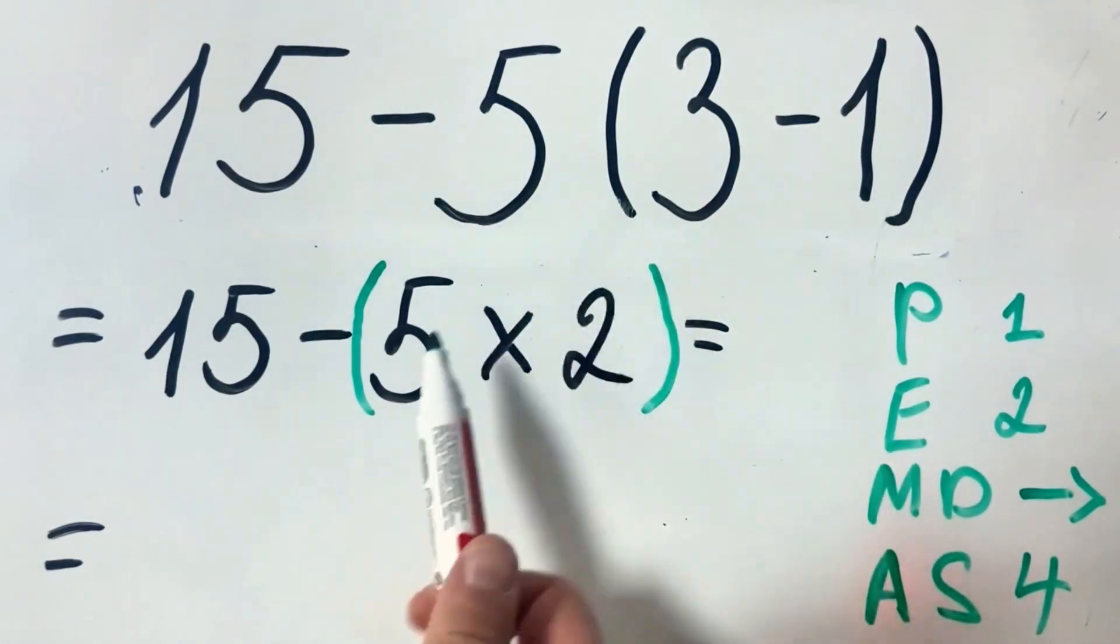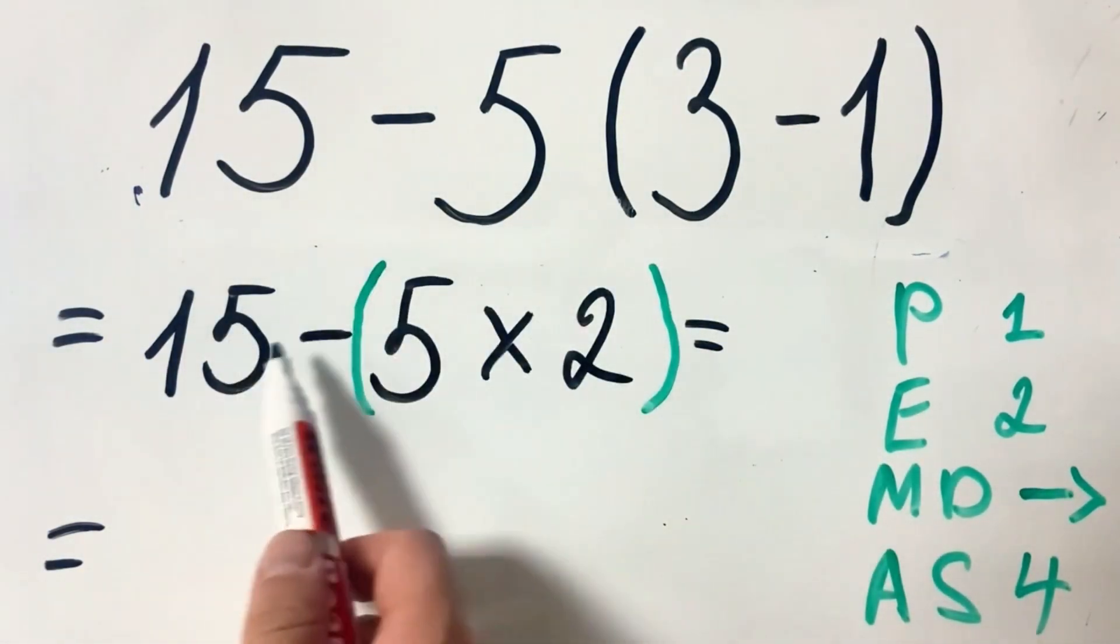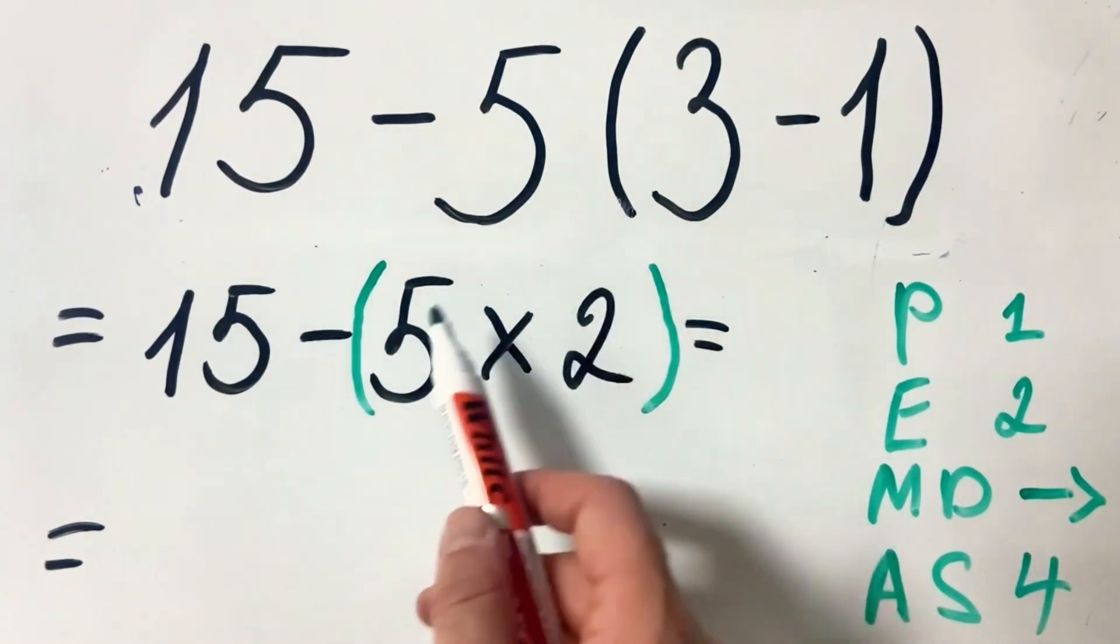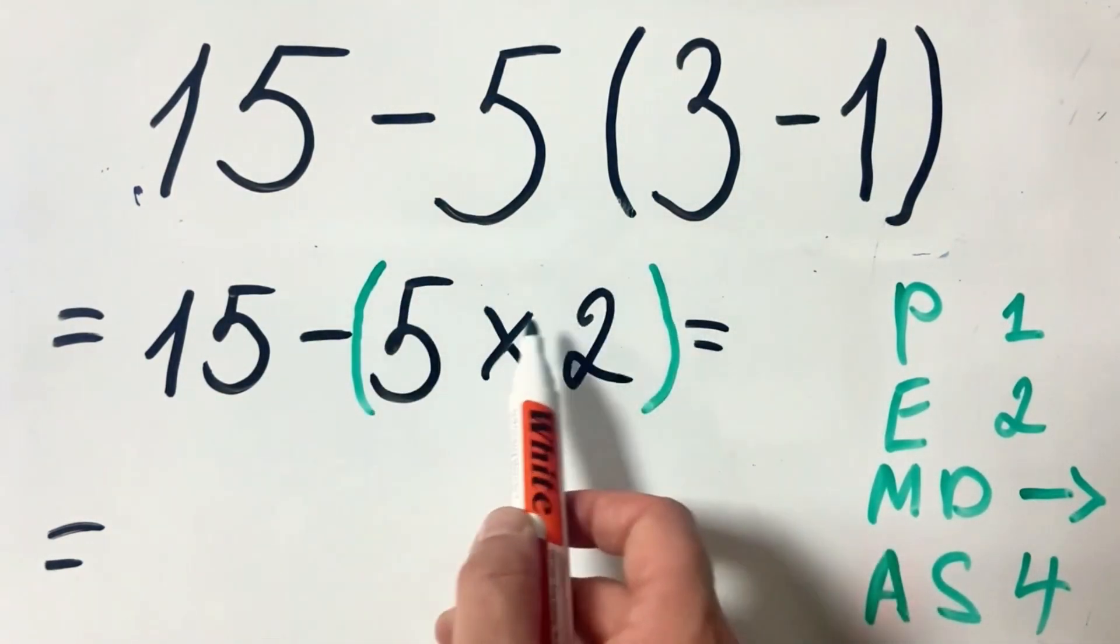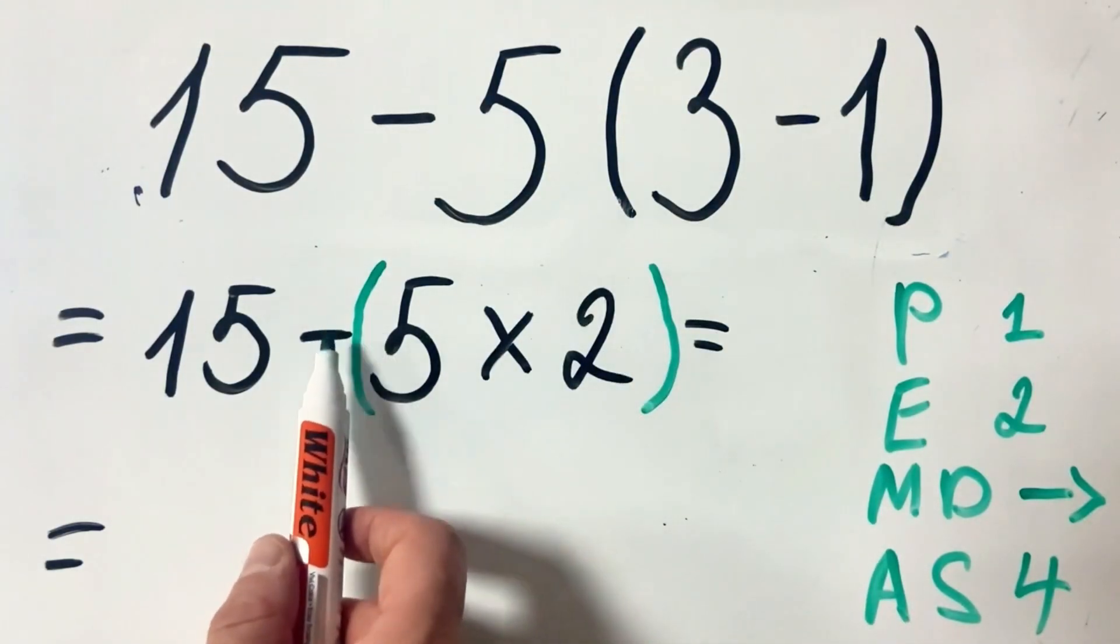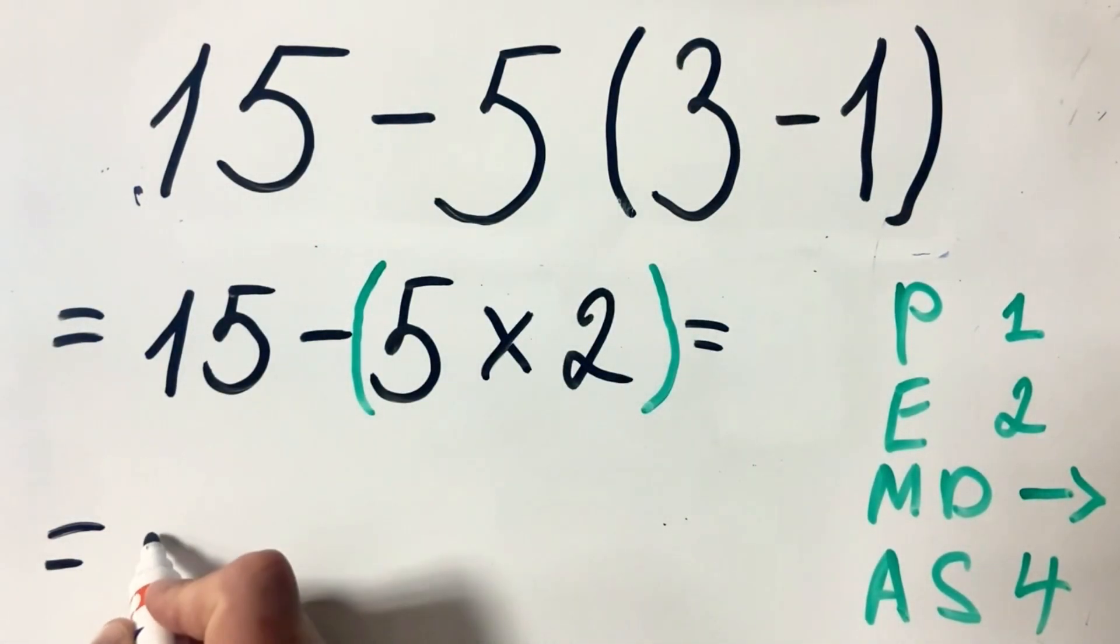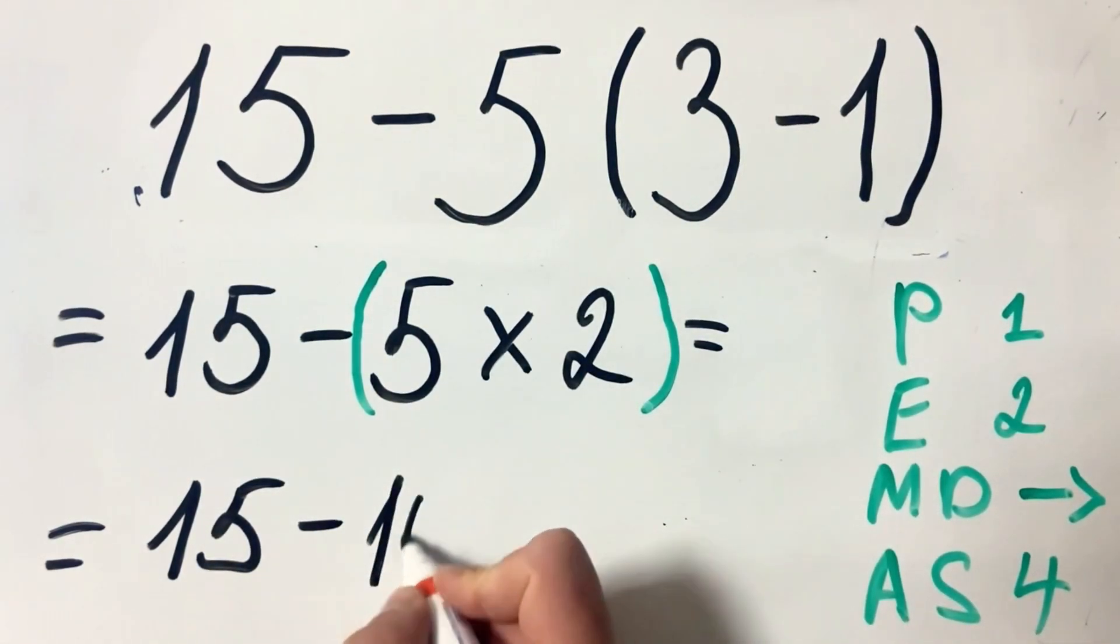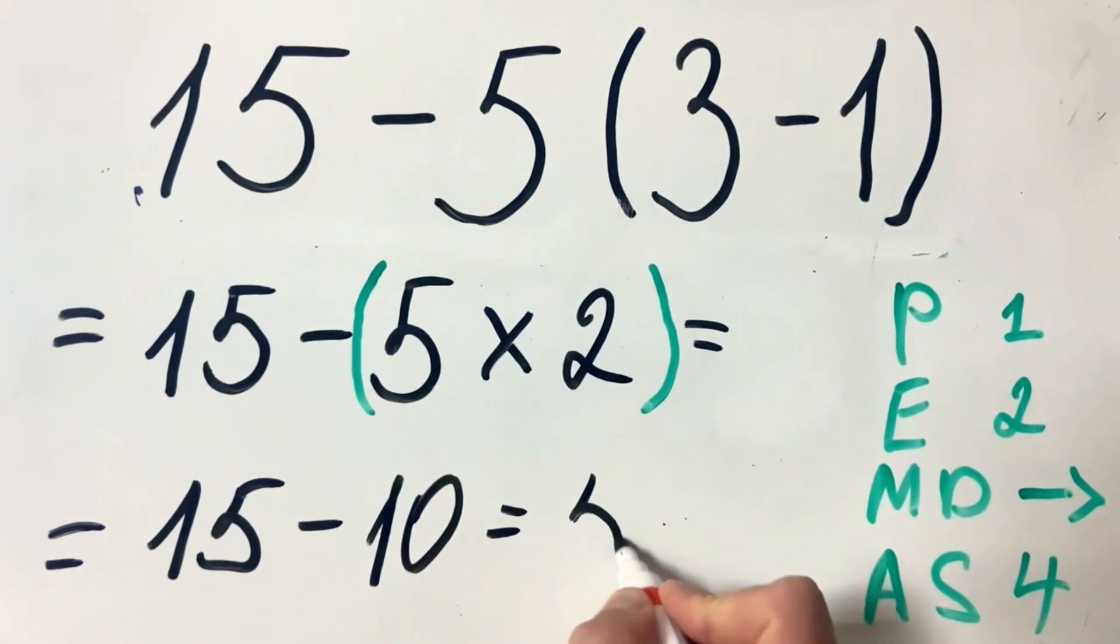In case you have this type of equation and you get multiplication and subtraction without brackets, to make it easier, just put brackets around multiplication and division so you don't get confused by the sign. So we have 15 minus 10, which equals 5.